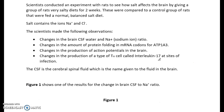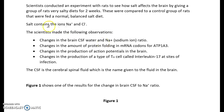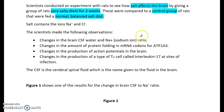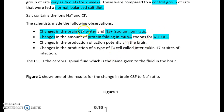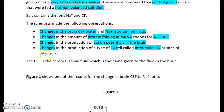The next section focuses on a practical experiment involving salt. Scientists looked at an experiment with rats to see how salt affects the brain. One group of rats was given a very salty diet for two weeks, compared to a control group fed a normal balanced diet. The scientists made four observations: changes in the brain's cerebrospinal fluid to sodium ion ratio; changes in protein folding in mRNA codons for ATP1A3; changes in the production of action potentials in the brain; and changes in production of a T helper cell called interleukin-17 associated with infection.